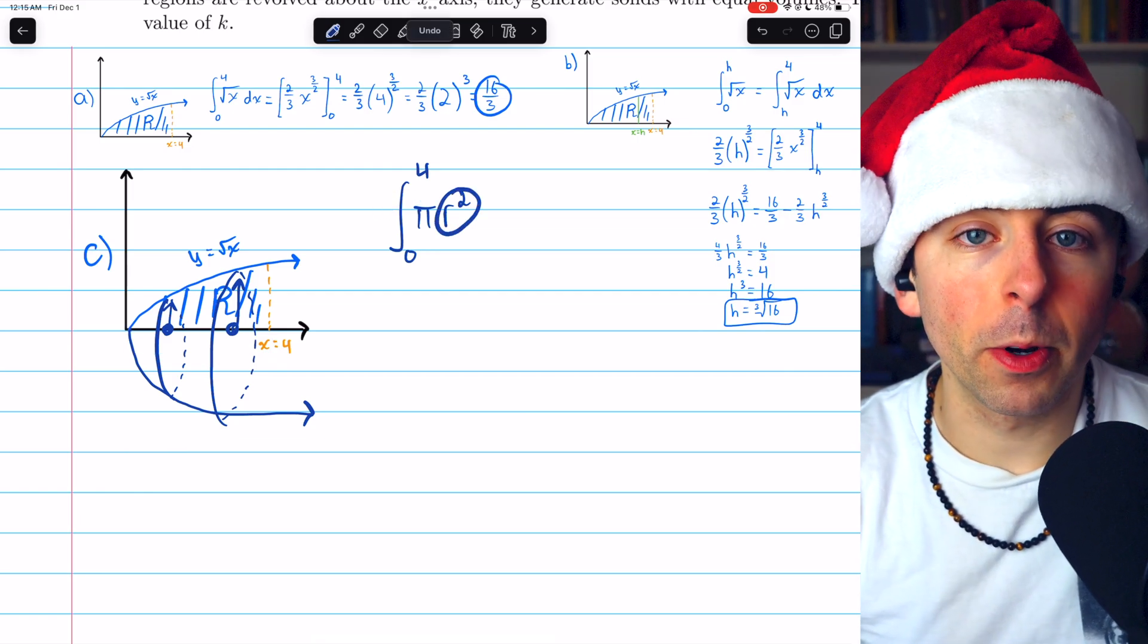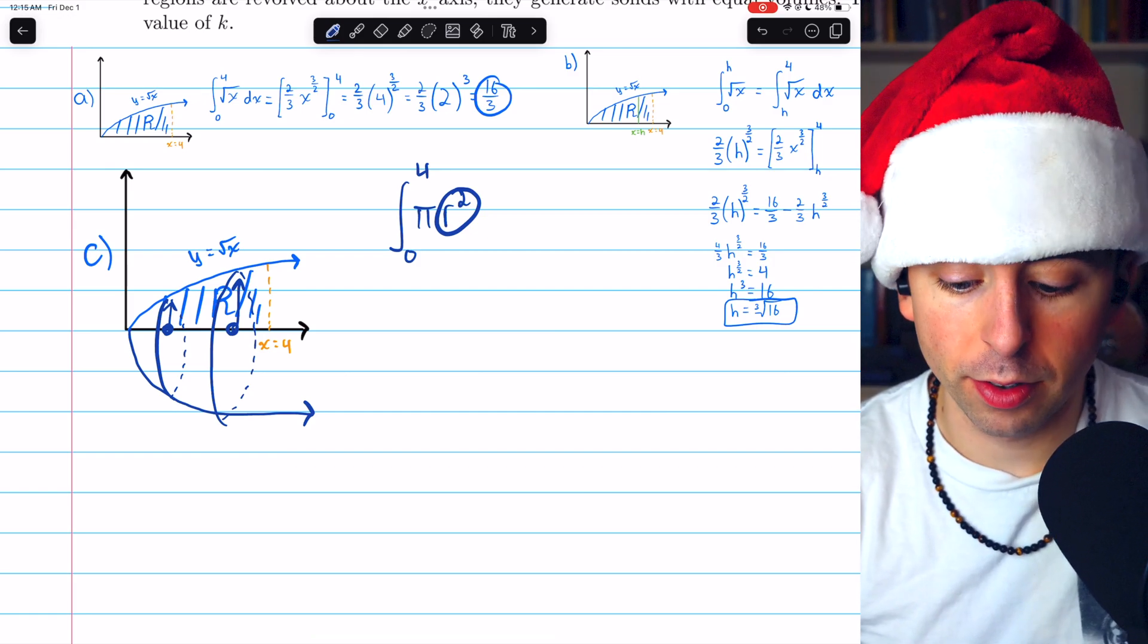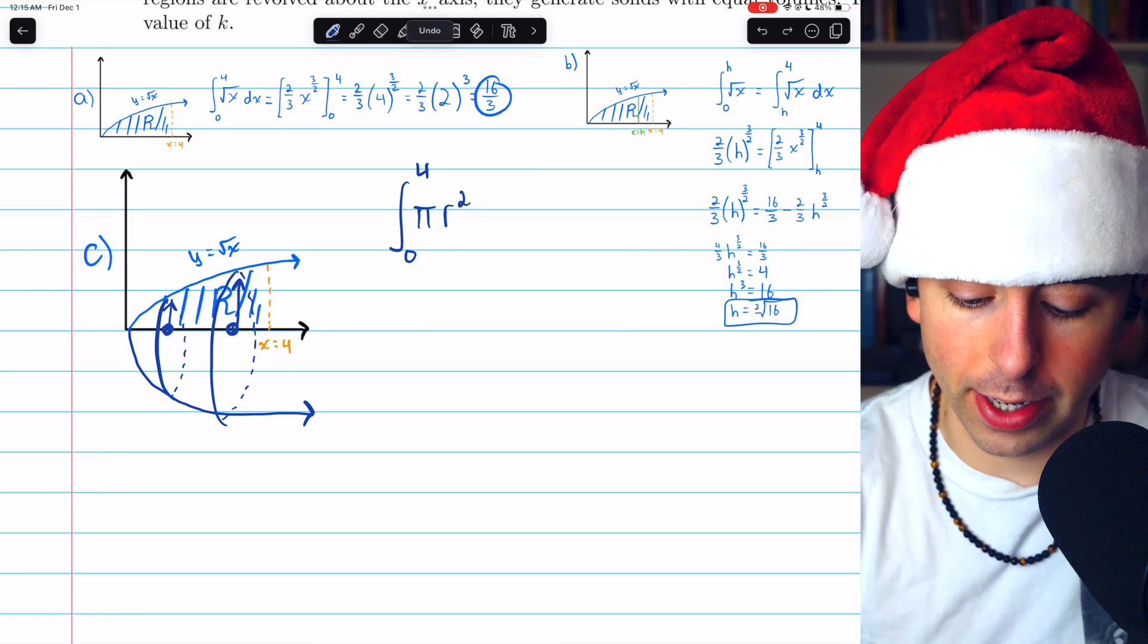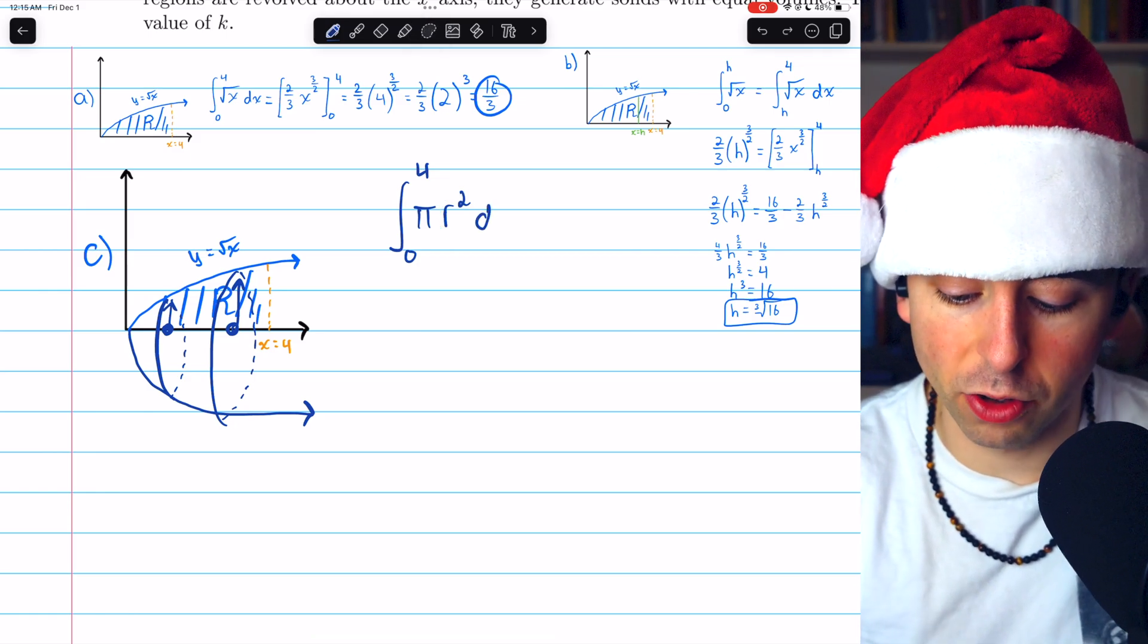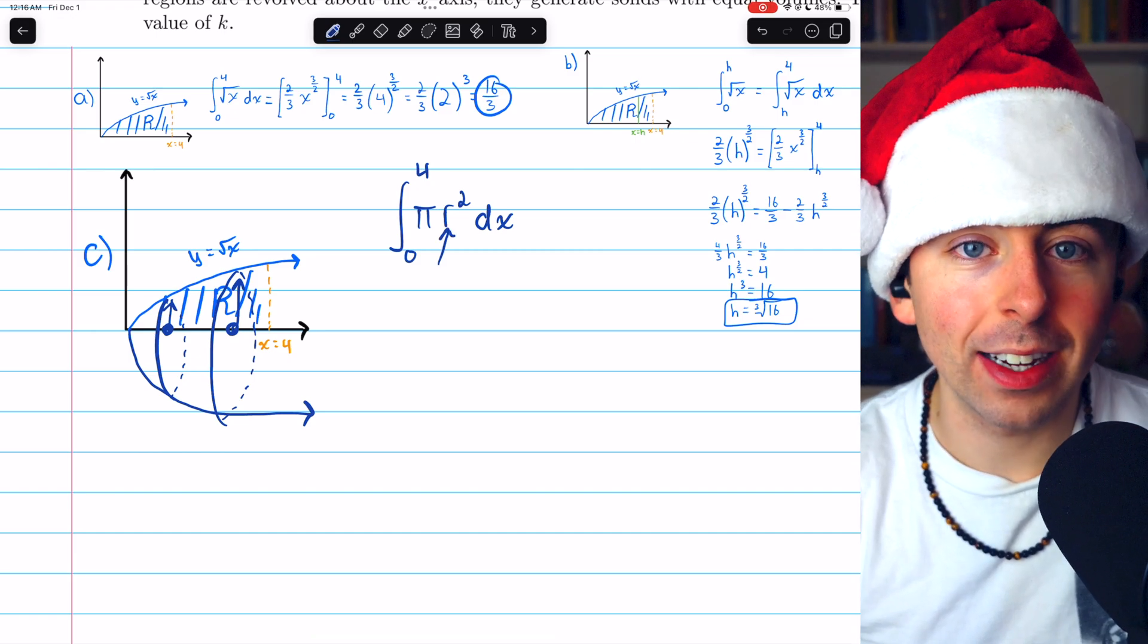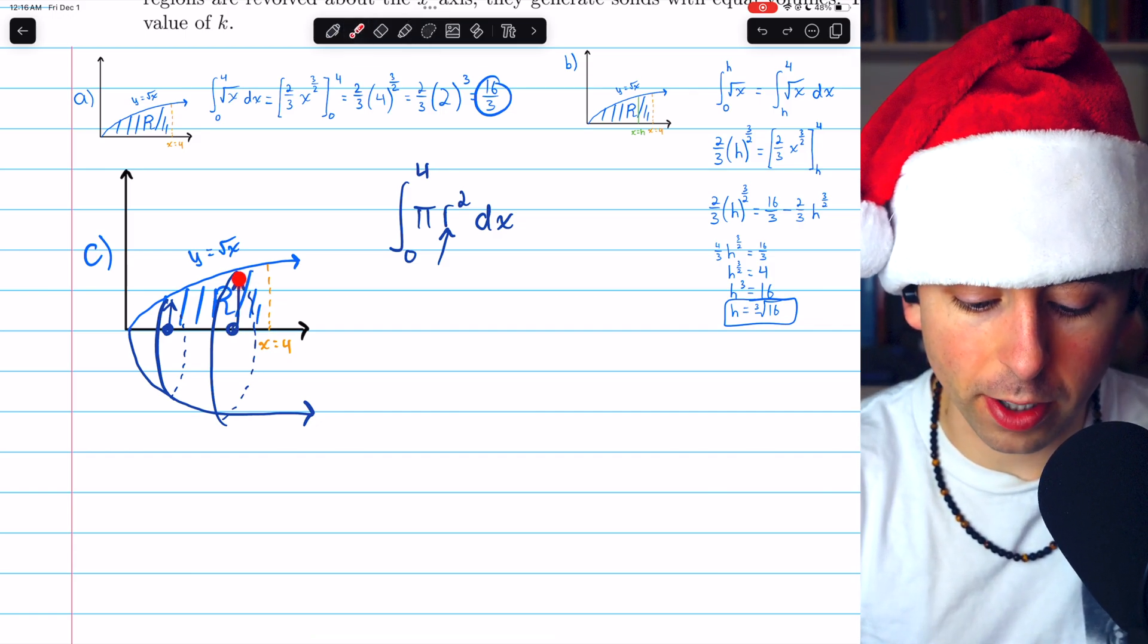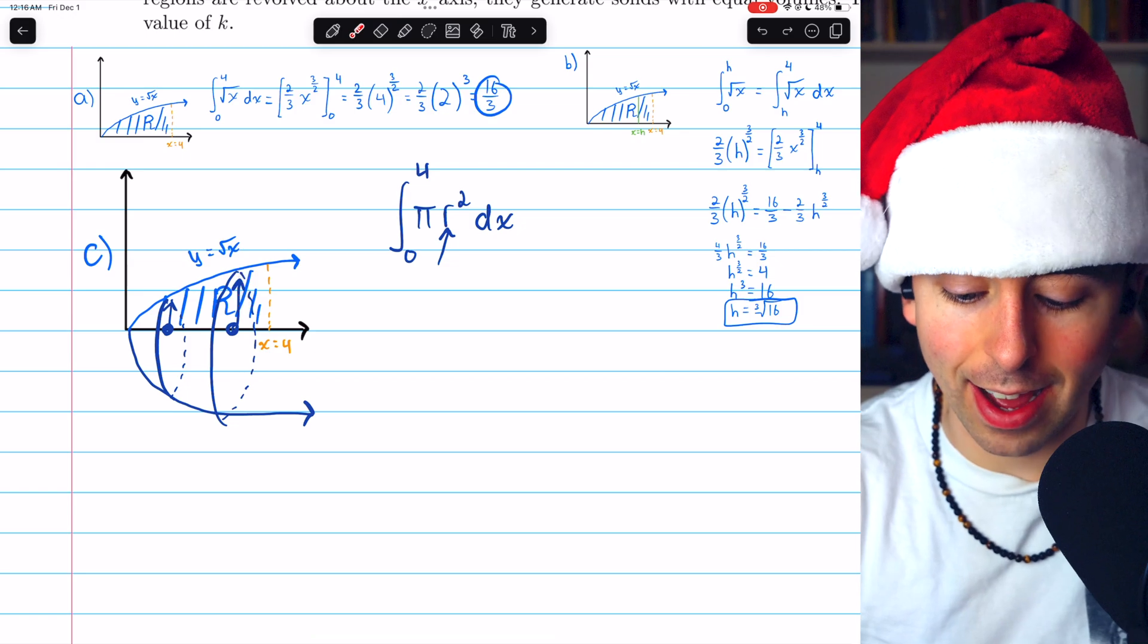Now the pi we can take out of the integral. The R, remember, is the radius of a cross-sectional circle. And we are integrating this, by the way, with respect to X. So how do we express the radius as a function of X? Well, like we just said, from the sketch too, we can see this. The radius of each circle is just the value of the function root X. It's like a height.